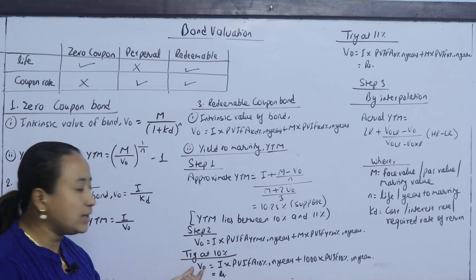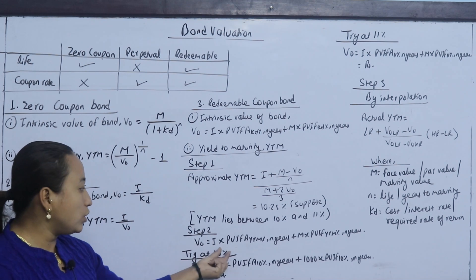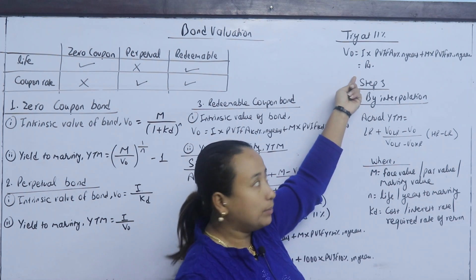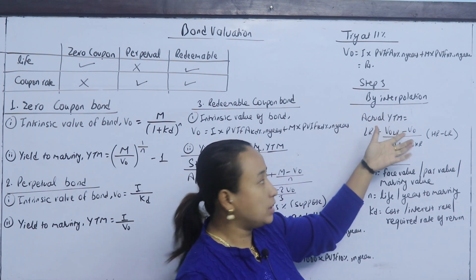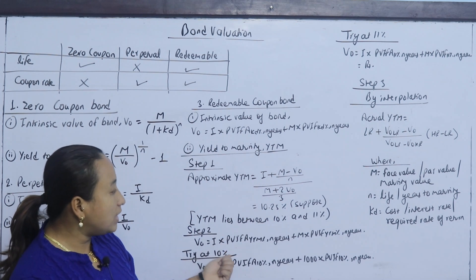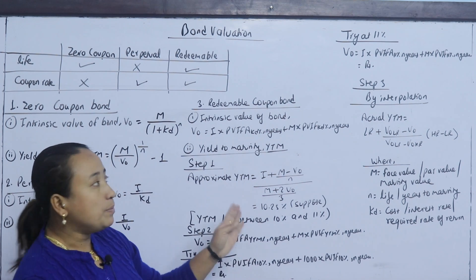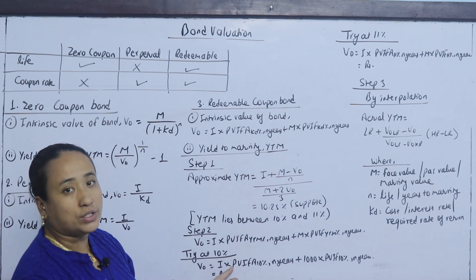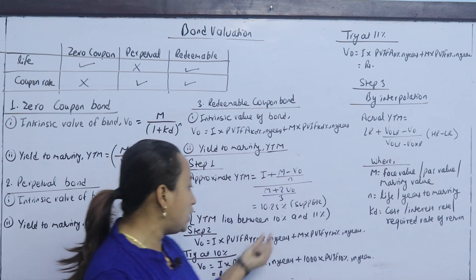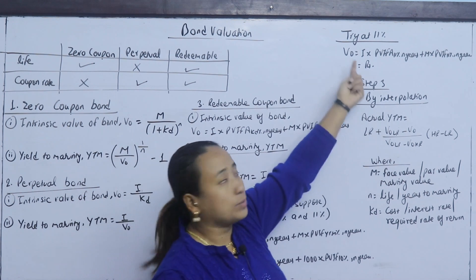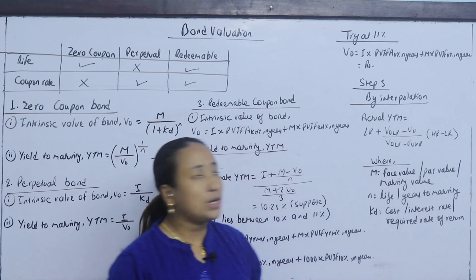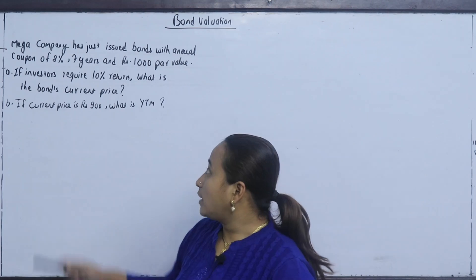In step 2, we calculate V0 at the lower rate (say 10%) and at the higher rate (say 11%). In step 3, we do interpolation. Actual YTM equals lower rate plus V0 at lower rate minus actual V0, divided by V0 at lower rate minus V0 at higher rate, multiplied by higher rate minus lower rate.